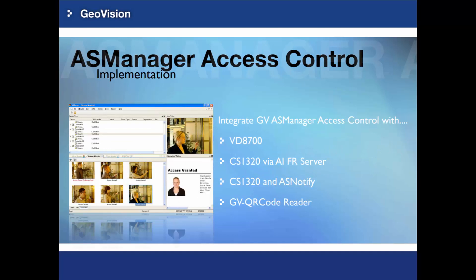Four different integrations will be introduced in this video. With the first two integrations, VD8700 and CS1320 via AIFR server, the user is able to do access control with face recognition — a card will no longer be needed. The third integration, CS1320 with ASNotify, provides the most popular doorbell solution. The last one, the GV QR code reader, helps visitors avoid the checking procedure of obtaining an access card.